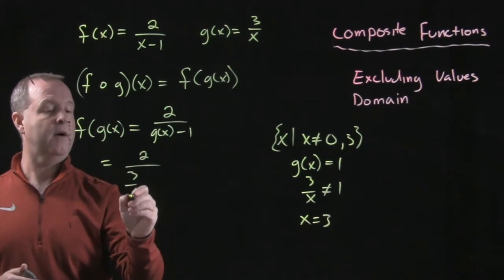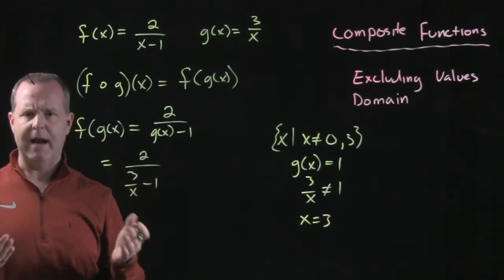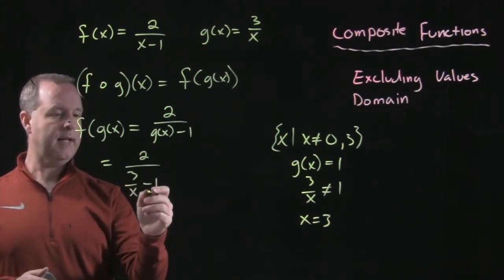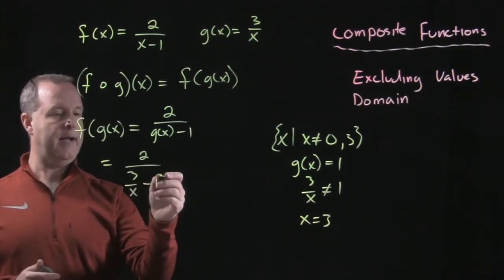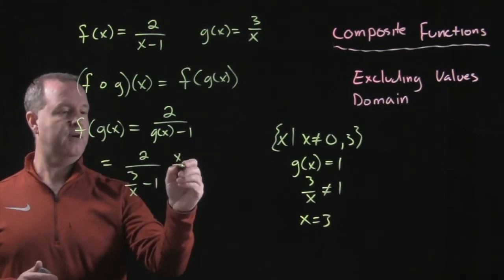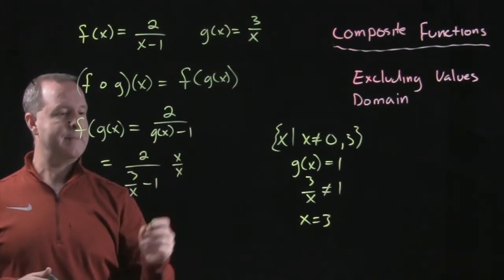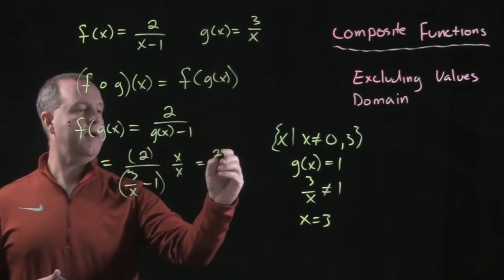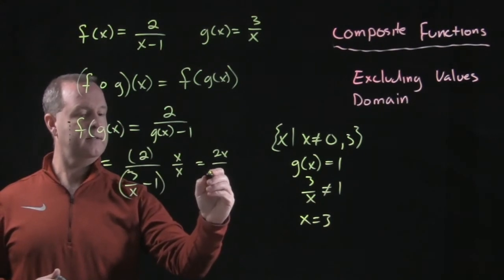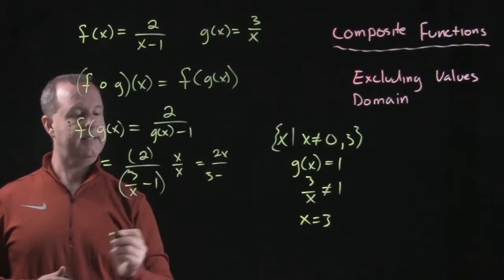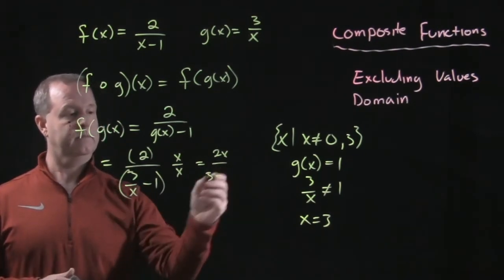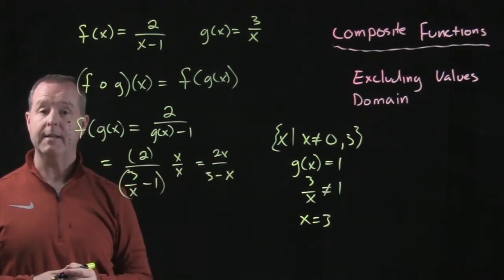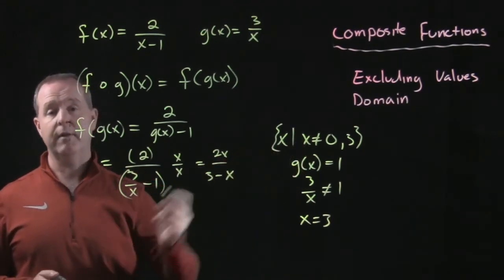g of x becomes three over x minus one. Now we look at some of our complex fractions we've done before. Let's multiply clever version of one as x over an x. May not be the quickest way. That becomes two x over three minus an x. And there's my composite function 2x over three minus x with the exclusions of zero and three. Those values cannot be part of my domain.